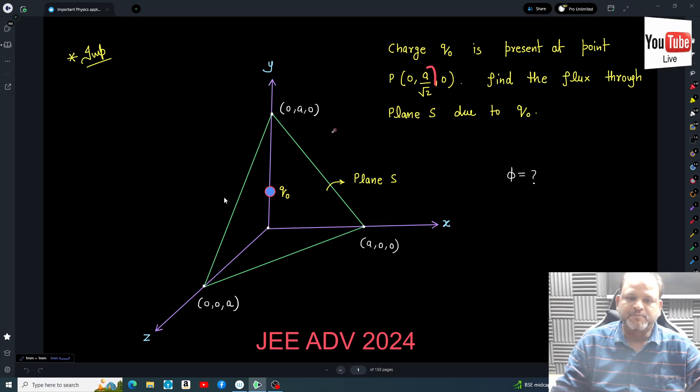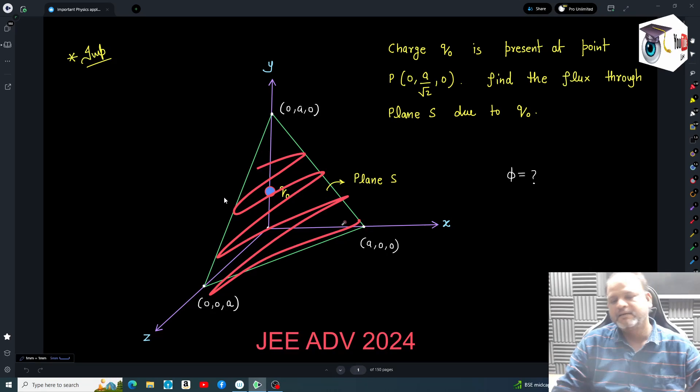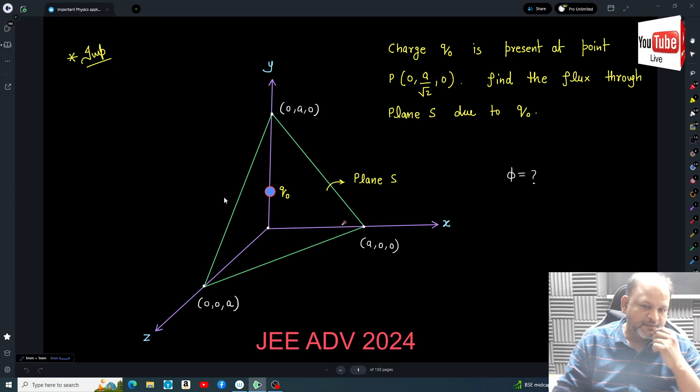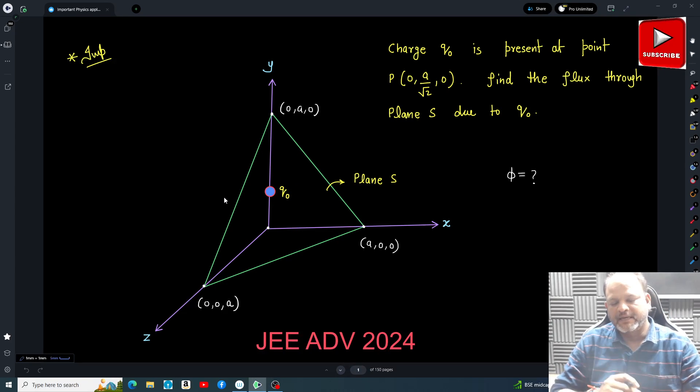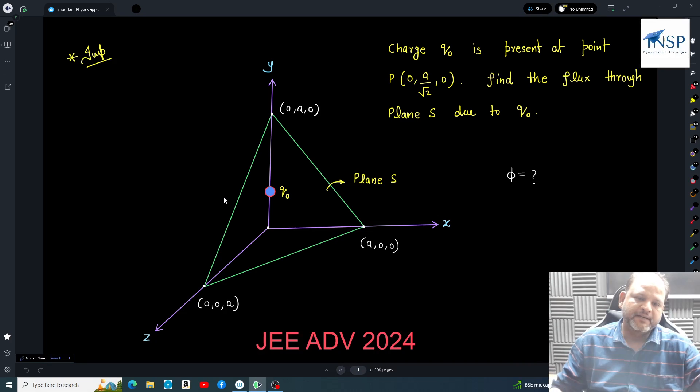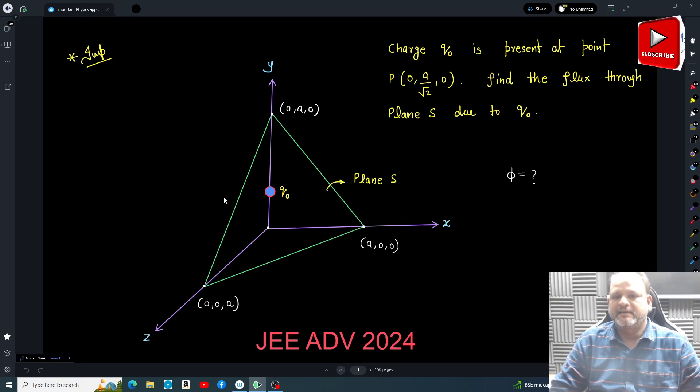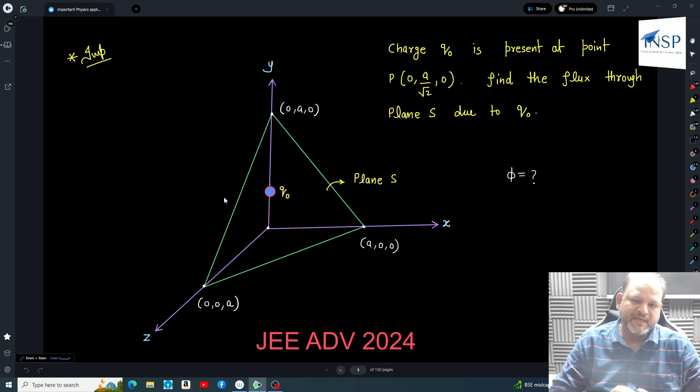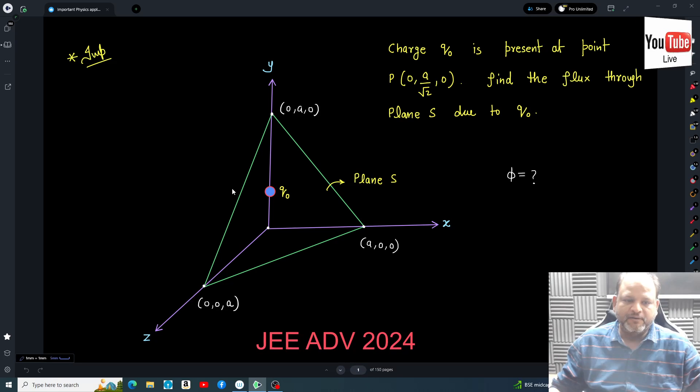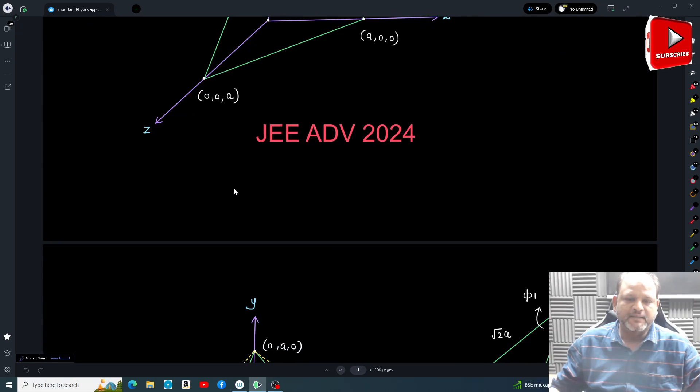And this charge is placed at a distance of a/√2, so this distance is also given and they are asking flux passing through this plane. Now if we directly solve this question, it is very tough. When I gave this question many people got the right answer, but at the same time many people made mistakes in this problem.